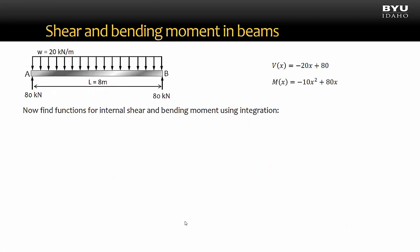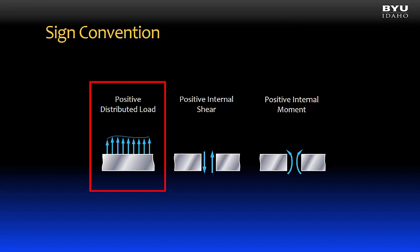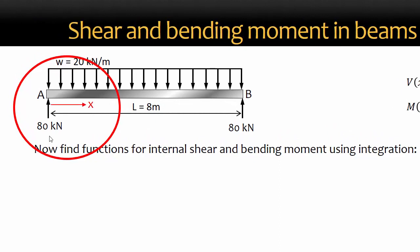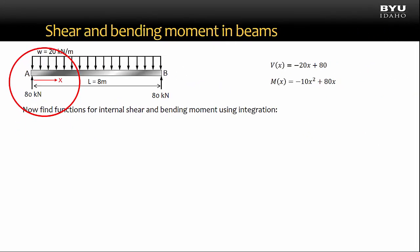Now let's repeat the problem using integration. Note that the first step will be to find the support reactions — these were already found in the previous example. We will then derive the shear function by integrating the function for the distributed load as described by this rule. What is the function for the distributed load? In this case, we have a uniformly distributed load of 20 kN per meter pointing downward. Thus, the function for the distributed load is simply a constant with a magnitude of 20. I define an x-axis so that at A, x is equal to 0, and at B, x is equal to 8 meters. The selection of this origin at A is arbitrary. Now I show the distributed load as a function of x — it's just negative 20.